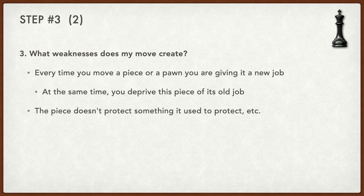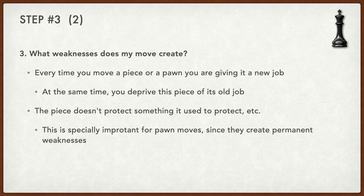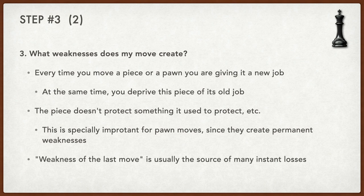The third question is: what weaknesses does my move create? What weaknesses do I leave behind? Every time you move a piece or a pawn, you give it a new job but it no longer does the job it used to do. This is especially important for pawn moves because pawn moves create permanent weaknesses — pawns cannot go backward. Every pawn controls two squares to the left and right, and once you move the pawn, those two squares become weakened. Many times I lost games because I didn't check for this weakness and my opponent exploited it in a tactical sequence.